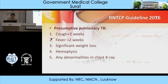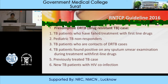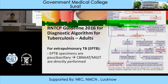RNTCP guideline 2016: presumptive pulmonary TB includes cough less than 2 weeks, fever greater than 2 weeks, significant weight loss, hemoptysis, and any abnormalities on chest X-ray. Nowadays, any patient with cough and fever can be included as presumptive pulmonary TB. Presumptive drug-resistant TB cases include: TB patients who failed first-line treatment, pediatric TB, non-responders, contacts of DR-TB cases, TB patients found smear-positive during treatment with first-line drugs, previously treated TB cases with signs of TB, and new TB patients with HIV co-infection.